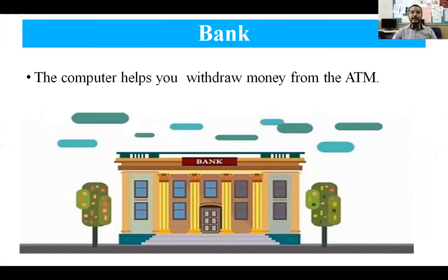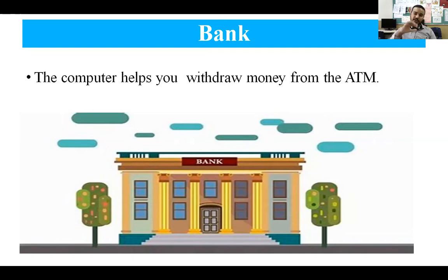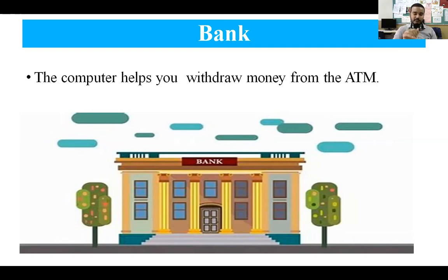The next place is the bank. When you go to a bank, there is a cashier who takes and gives cash. When you withdraw money — which means taking money from the bank — or when you deposit money — which means giving money to the bank to keep it safe — computers are used to record all those transactions.